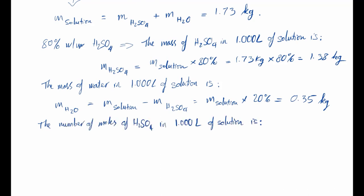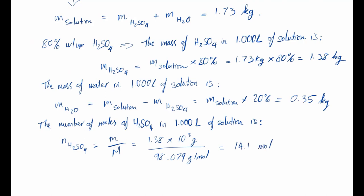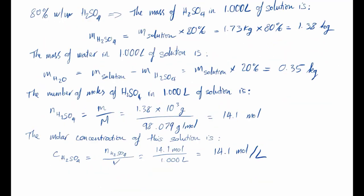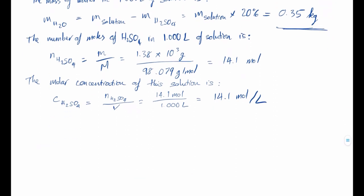The number of moles of sulfuric acid in one liter of solution equals its mass divided by the molar mass of sulfuric acid, giving us 14.1 moles. Since this is the number of moles in one liter of the solution, it is therefore also the molar concentration: C = n/V = 14.1 moles per liter.